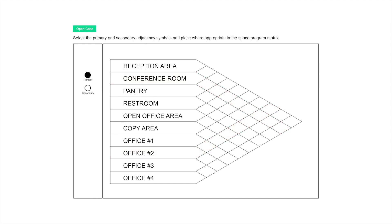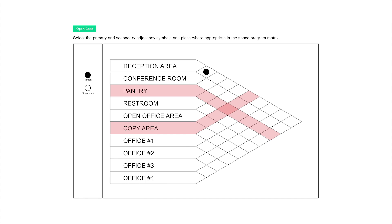For example, if there's a primary adjacency between the reception area and the conference room, this is the box where the primary symbol will be placed, because this box touches both the reception area and the conference room rows. If there's a secondary adjacency between the pantry and the copy area, a secondary symbol will be placed in the box where they intersect. Yes, it really is that simple — do not overthink it. Let's now continue filling out this entire matrix based on the program we have.